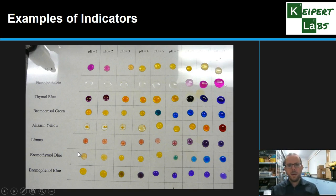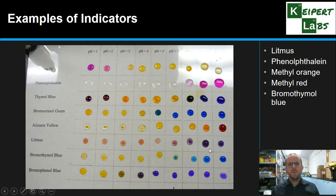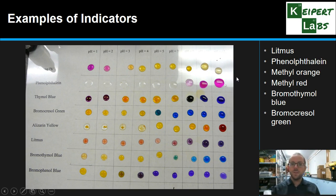Going from pH 1 all the way up, you can see the colour ranges. There's a set of six we're going to focus on more specifically: litmus, phenolphthalein, methyl orange, methyl red — which aren't on this list but are two common ones we'd encounter — bromothymol blue, and bromocresol green. We have different indicators that give different colours at different levels of pH, which makes them very useful tools. It's about picking the right one for the situation.